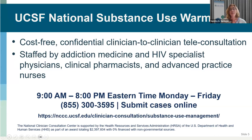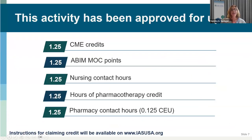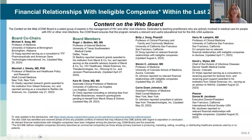We also want to point out the UCSF national substance use warm line — the number is on screen — staffed by addiction medicine, HIV specialists, and pharmacists to answer any questions regarding substance use and HIV management. There is CME associated with this, including 1.25 AMA PRA category requirements, and it's also approved for ABIM MOC points — 1.25 — as well as nursing, pharmacotherapy, and pharmacist activity.